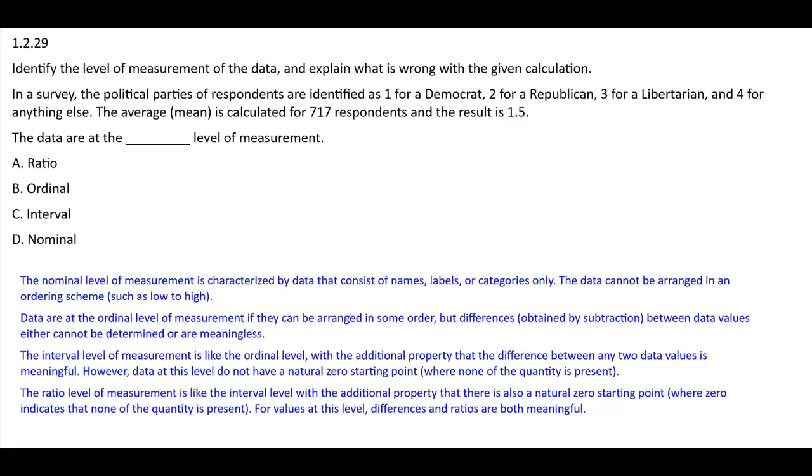Identify the level of measurement of the data and explain what is wrong with the given calculation. In a survey, the political parties of respondents are identified as 1 for a Democrat, 2 for a Republican, 3 for a Libertarian, and 4 for anything else. The average mean is calculated for 717 respondents, and the result is 1.5.